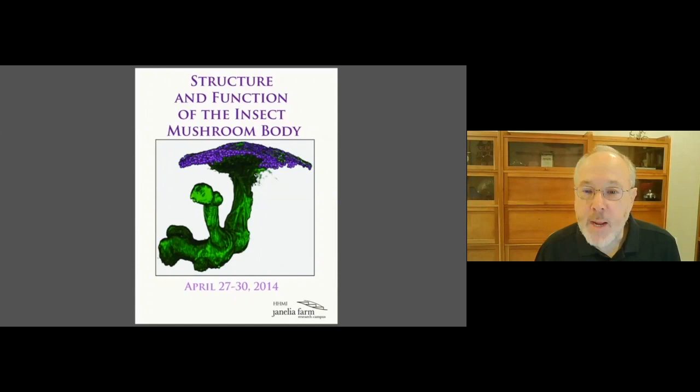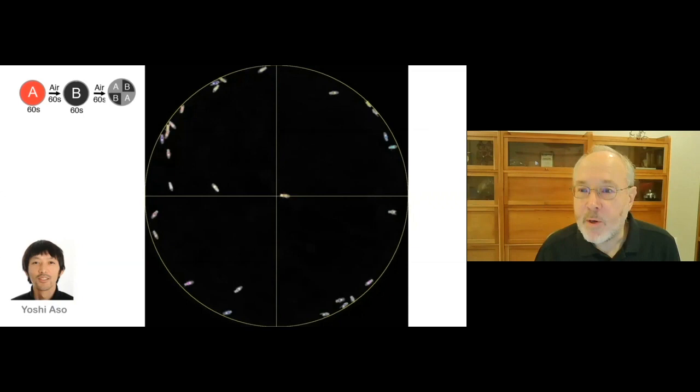I would like to use the remainder of my talk to give you an example of how we're using the connectome. I will discuss a part of the fly's brain called, because of its shape, the mushroom body. The mushroom body, or MB as I refer to it, is the main site of learning and memory in the fly's brain.